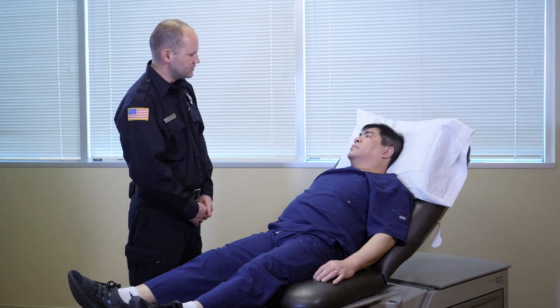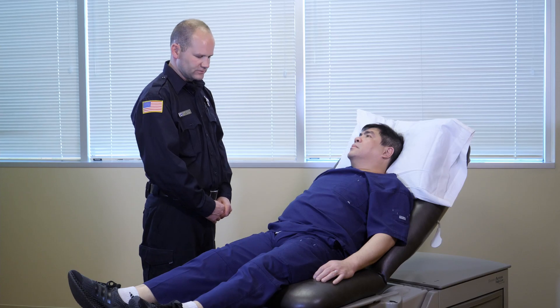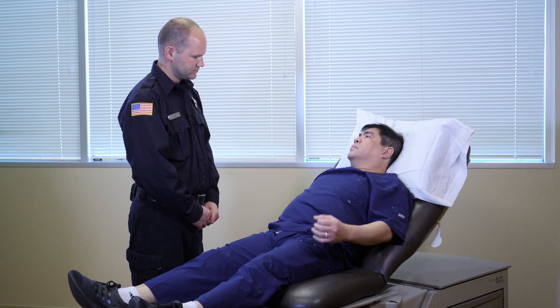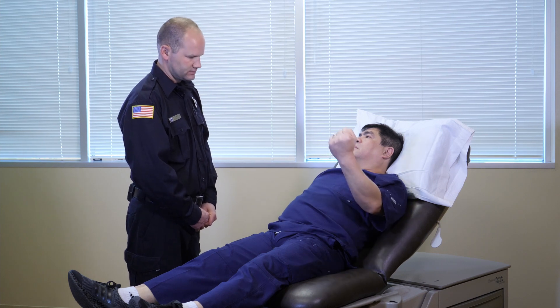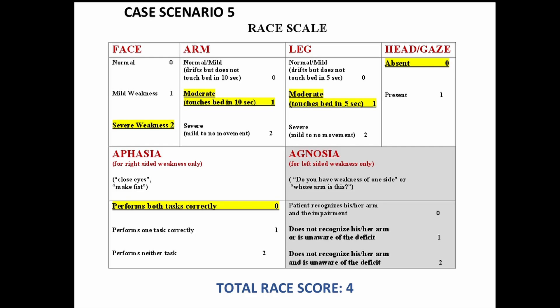Case 5: Aphasia testing is performed — the patient is asked to close their eyes and make a fist. RACE scale score is four. Since the weakness is on the right side, aphasia was tested.